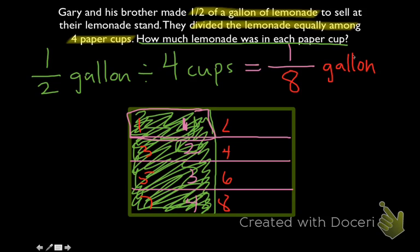The way we can check that, we know that division is the opposite of multiplication. So let's do a multiplication problem. Let's take our answer, 1 eighth, multiply that by 4 and see if we get our original answer. That's going to be 4 over 8. I'm just going to simplify to 1 half.